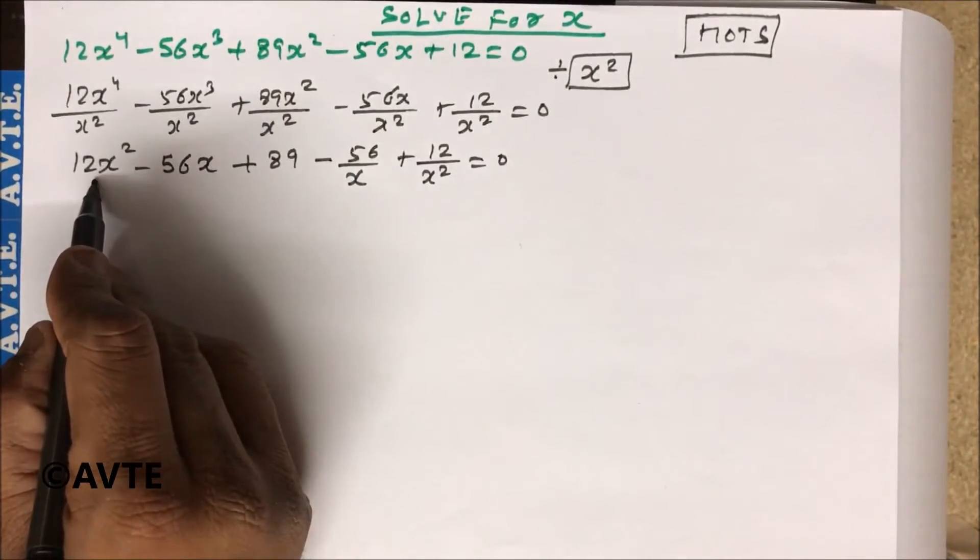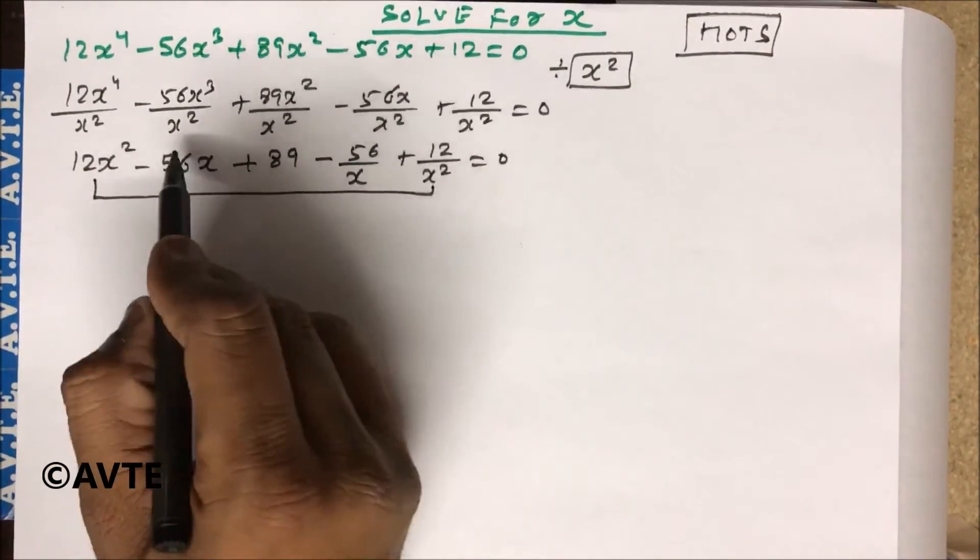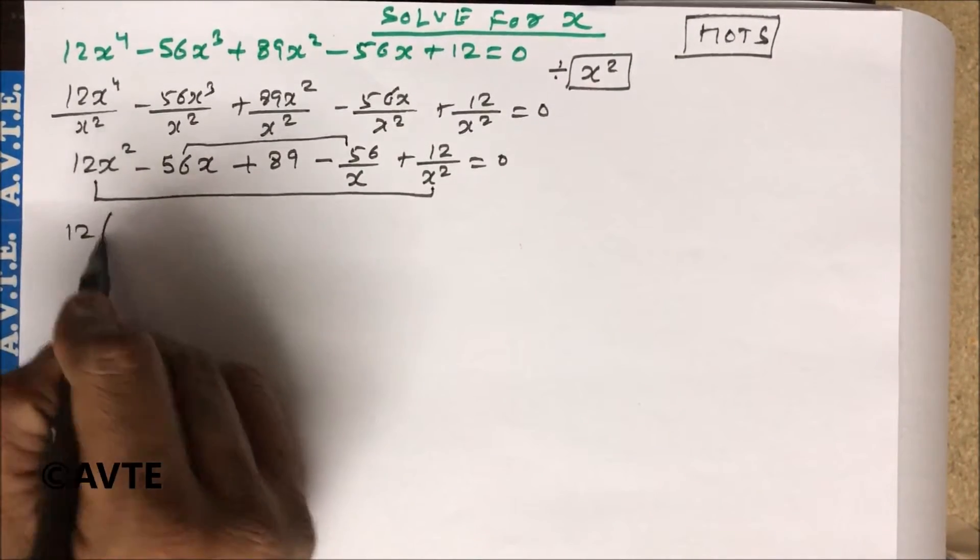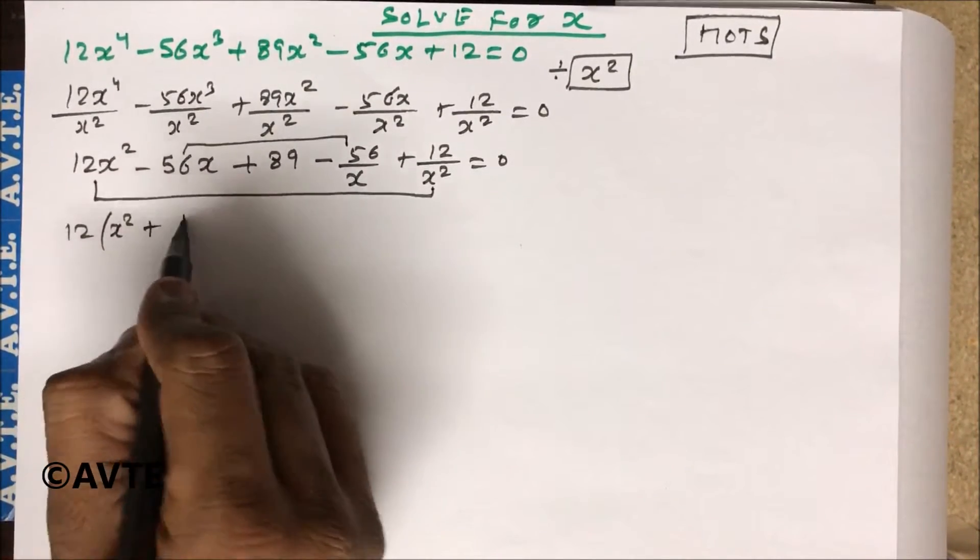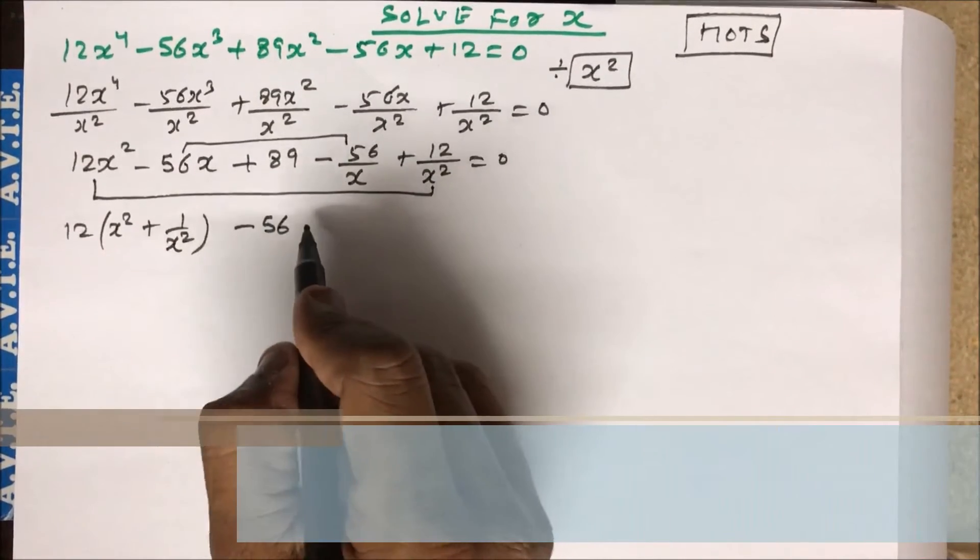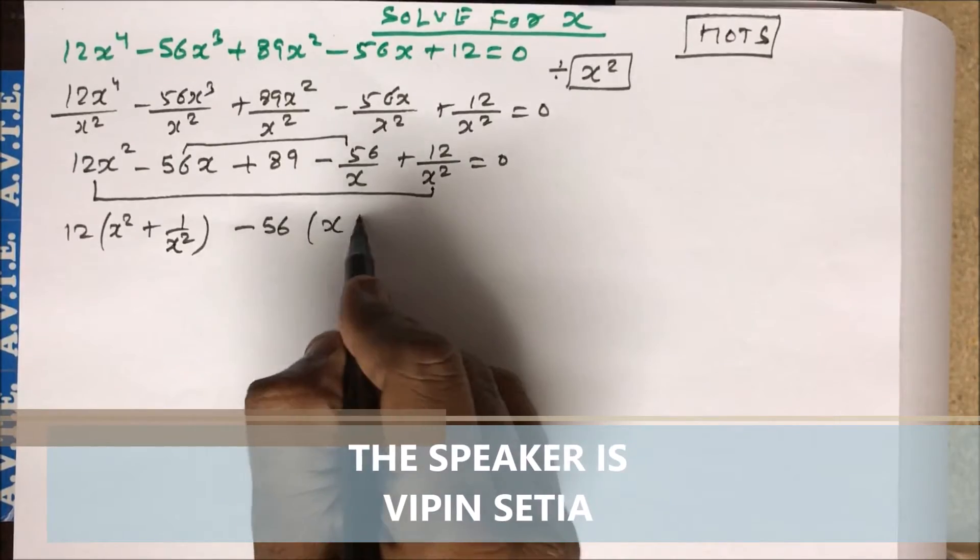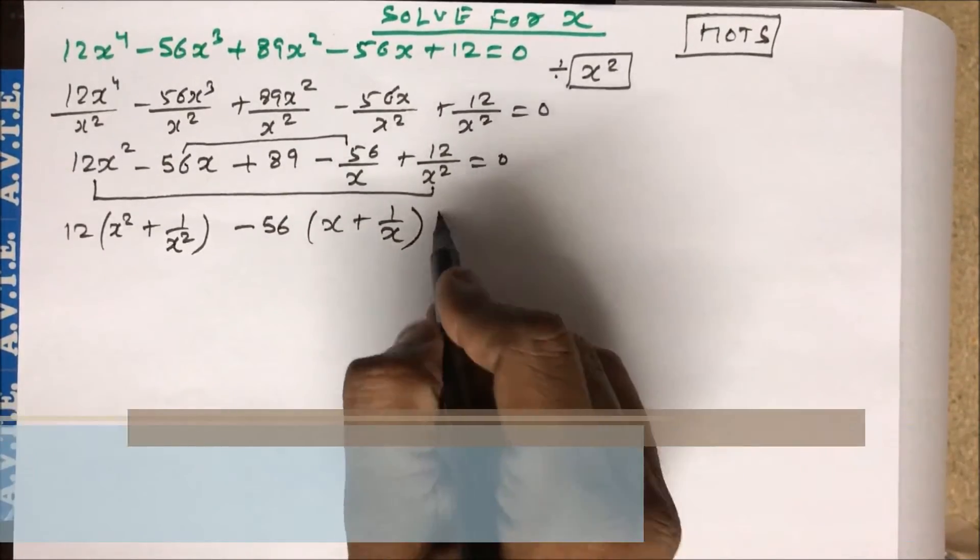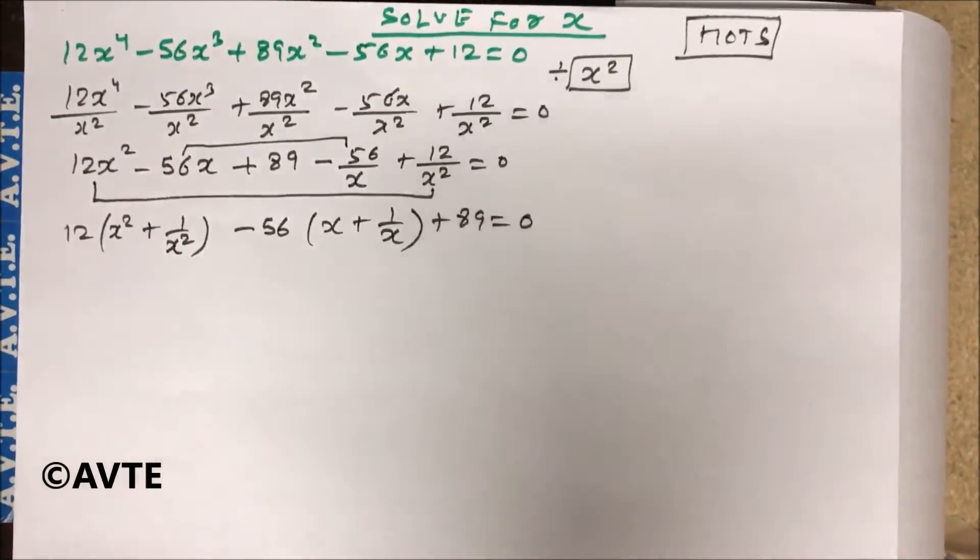If you see this and this, you have 12(x² + 1/x²) - 56(x + 1/x) + 89 = 0.